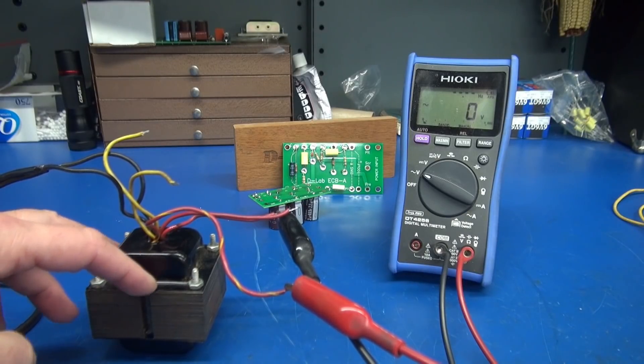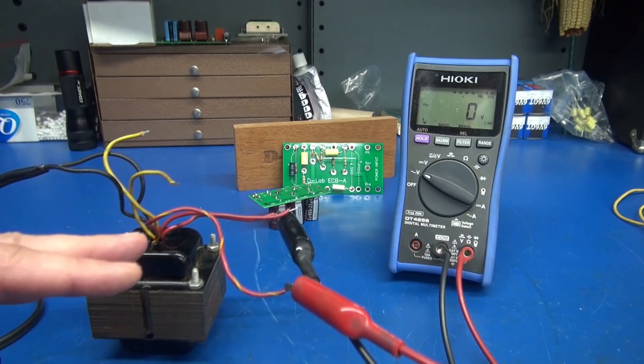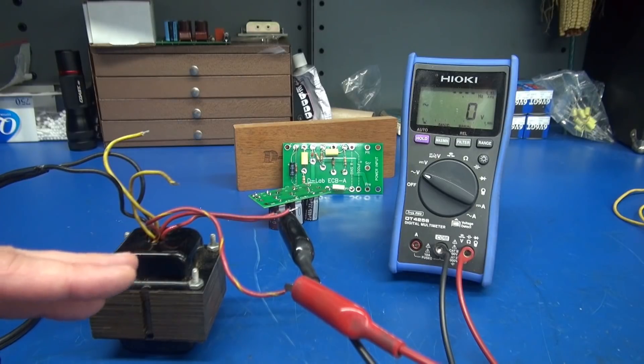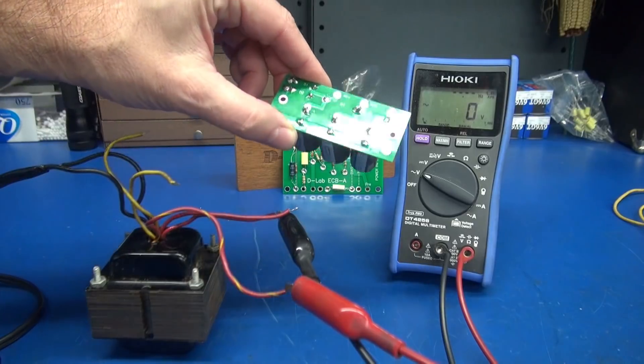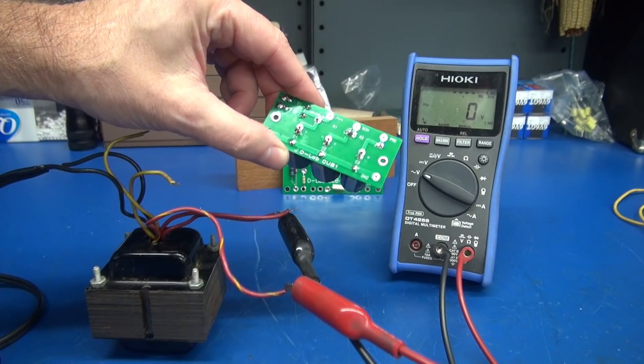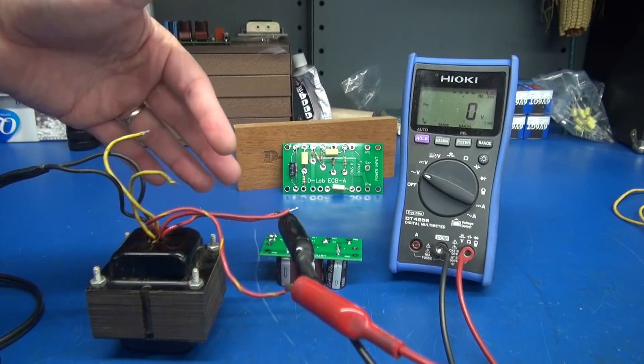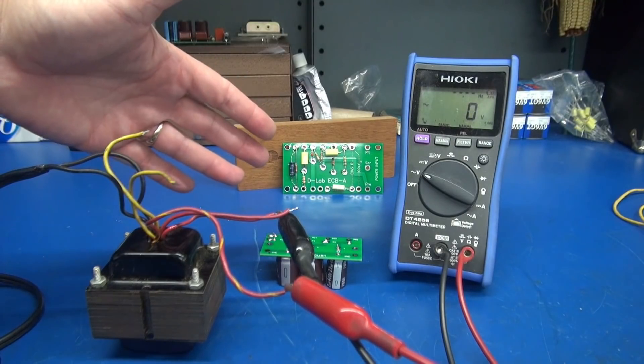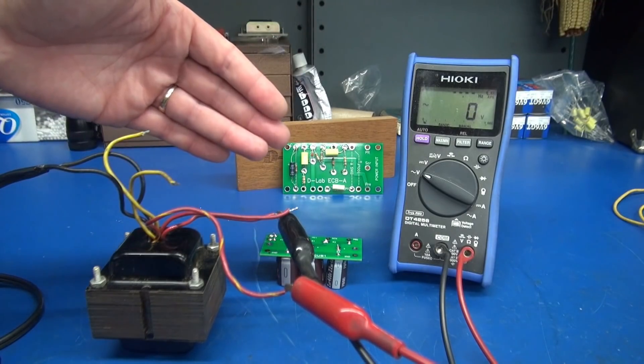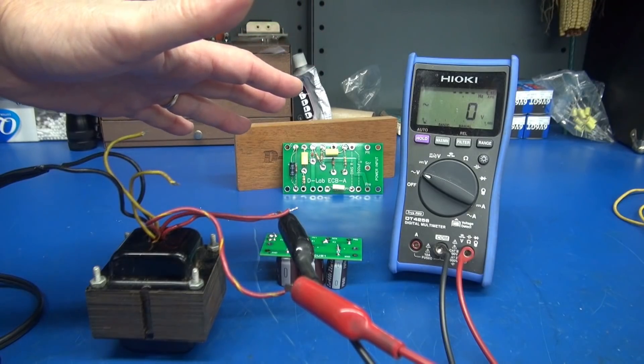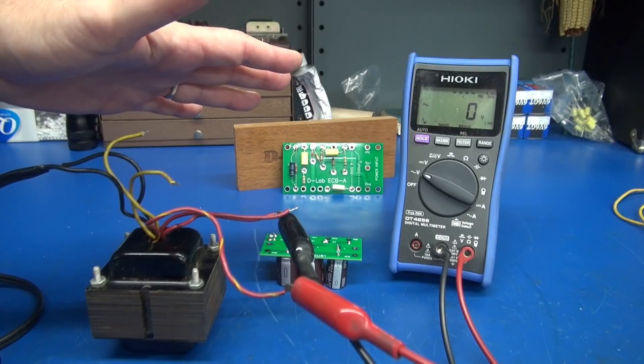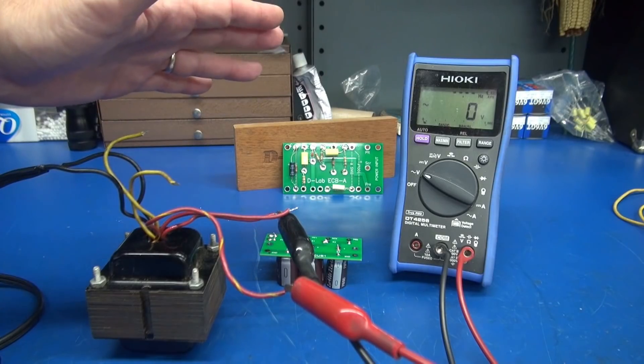We need to load this transformer for the current that the amplifier circuit is going to draw. So what I'm going to do next is we're going to hook up my little rectifier board. We're going to rectify this high voltage to high voltage DC. We'll put a load resistor on it and we'll measure the DC out and see if that falls under the 250 volt window that we need for 6AQ5 tube.